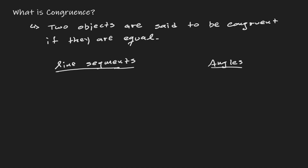Just to give an example, let's say we have a line segment. Let's say this line segment has a measurement of 3 — let's call it AB. And we have another line segment over here — let's call it CD. This line segment also has a measurement of 3. Those two line segments have the same length.